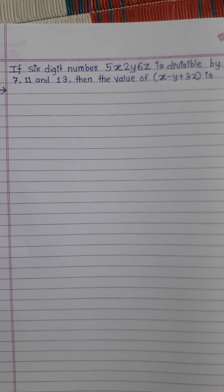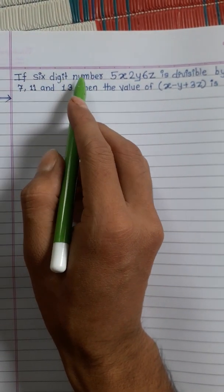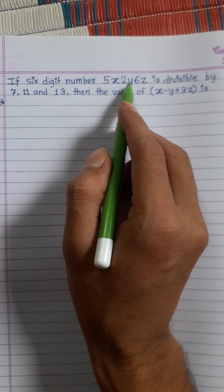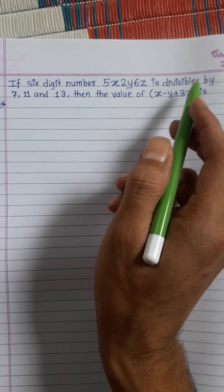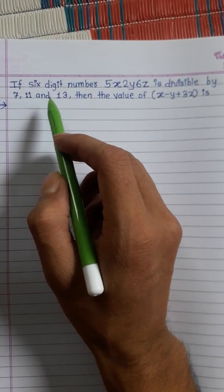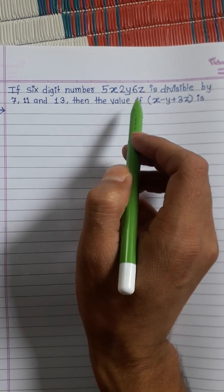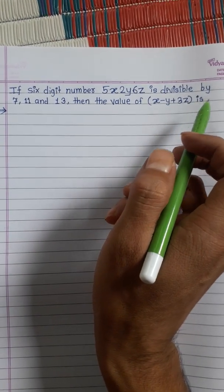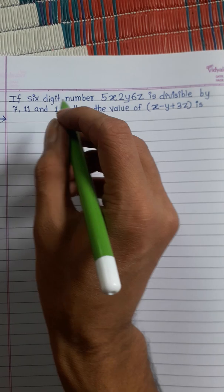Friends, today we will solve this question: if a six-digit number 5x2y6z is divisible by 7, 11, and 13, then what is the value of x - y + 3z?